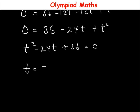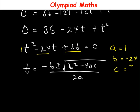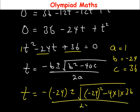To solve for the value of t, we are going to use the quadratic formula: t = (−b ± √(b² − 4ac)) / 2a. In this equation, the value of a is the coefficient of t², which is 1. The value of b is the coefficient of t, which is −24. And the value of c is 36.